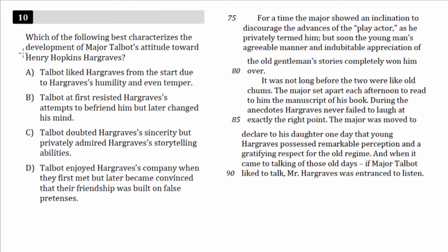If we go in more detail, lines 75 through 90 — the question says 'characterizes the development,' indicating some sort of change. So let's look at this. 'For a time, the major showed an inclination to discourage' — so he was inclined to discourage, not a fan — 'the advances of the play actor, as he privately termed him.'